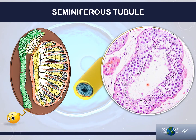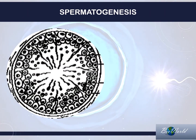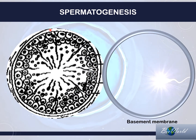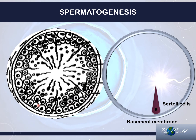Let me show you in diagram form. In this drawing of the cross section of the seminiferous tubule, you can see the first layer is what we call the basement membrane. The basement membrane is made up of fibrous proteins, and it supports two types of cells. You should be able to identify two types of cells: the first type are the elongated cells called the Sertoli cells, and the second type are the rounder cells called spermatogonium.